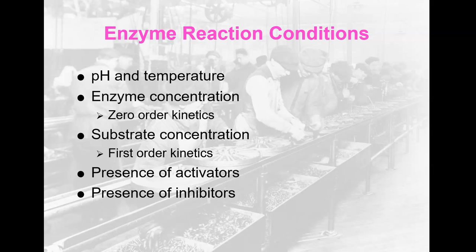If you are measuring in zero order kinetics, you will measure enzyme concentration, which affects the rate of the reaction. If you are measuring in first order kinetics, the substrate concentration will affect the rate and speed of the reaction. The presence of activators and inhibitors will also affect the reaction rate — activators will make reactions happen better, and inhibitors will obviously slow it down.